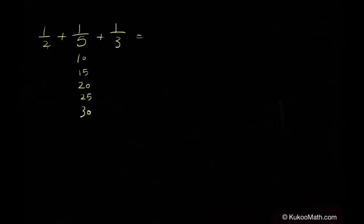Ten is divisible by two, but not by three. Fifteen is divisible by three, not two. Twenty is two, not three. Twenty-five is neither. And then thirty is divisible by both two and three. So, our new problem is going to have denominators of thirty.